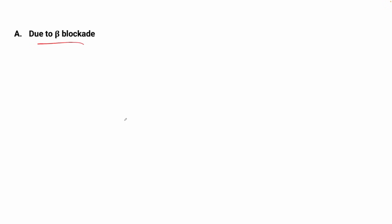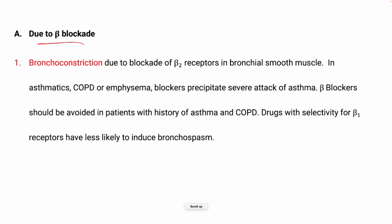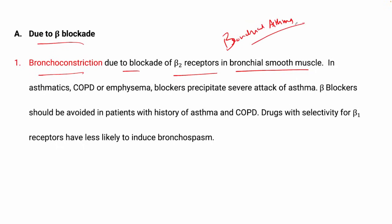The first adverse effect is bronchoconstriction, due to blockade of the beta-2 receptors in bronchial smooth muscles. This can precipitate a severe attack of asthma. In asthmatics, COPD, and emphysema patients, beta blockers can cause severe attacks. Beta blockers should be avoided in patients with a history of asthma and COPD, because it leads to more severe conditions.